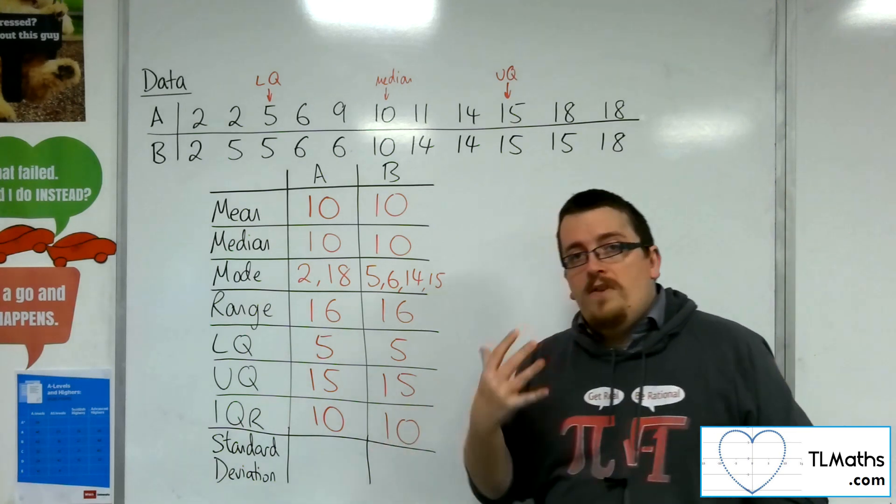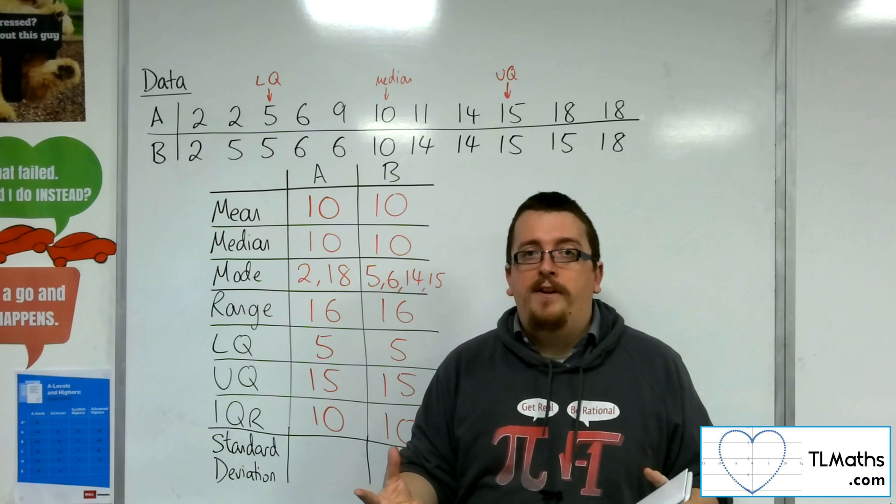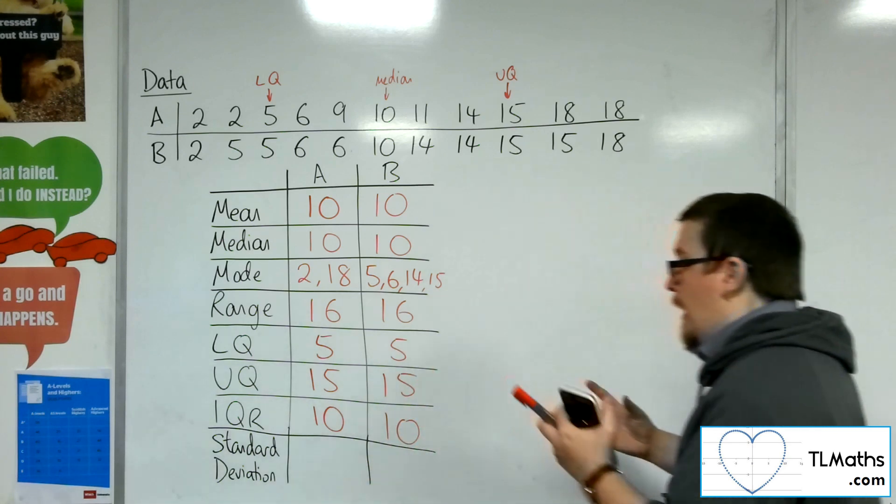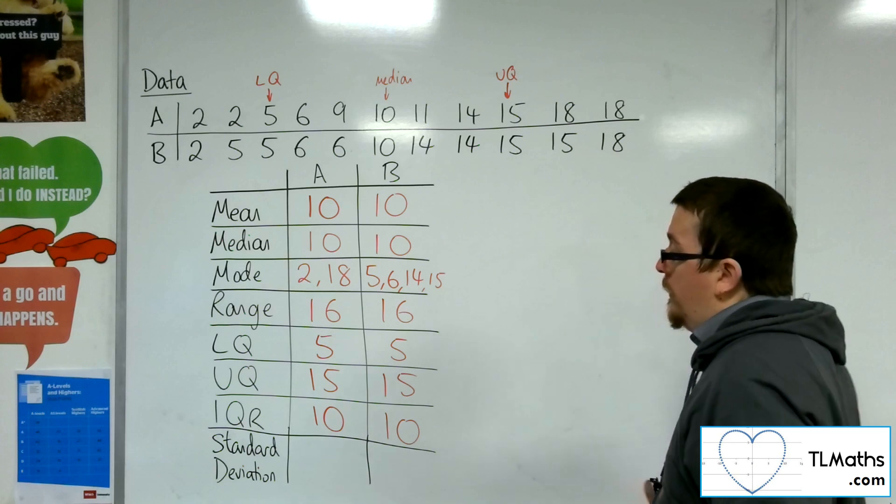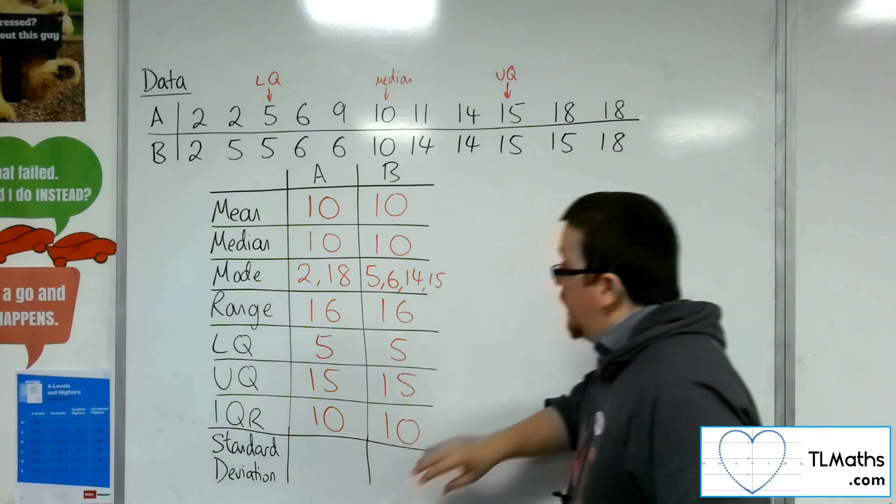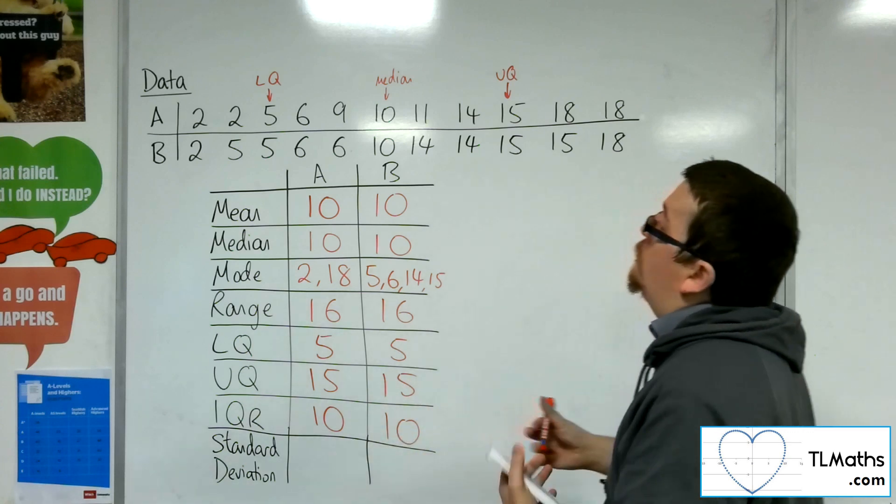So now that we've learnt the standard deviation as a measure of spread, and finding how far data is on average away from the mean, we can now go back to the original sets of data and compare the standard deviations to see if there is a difference.